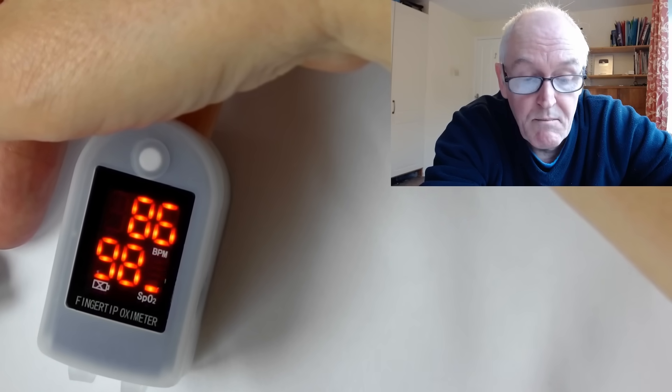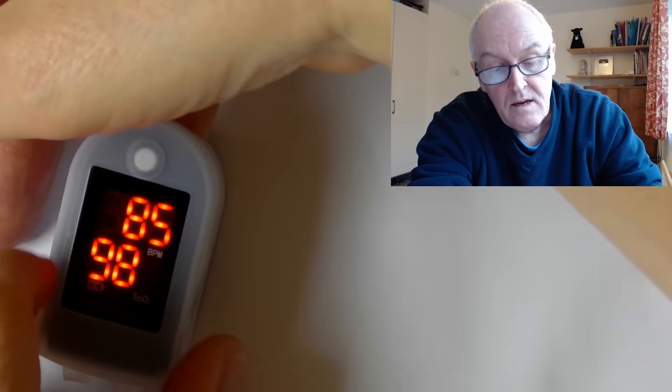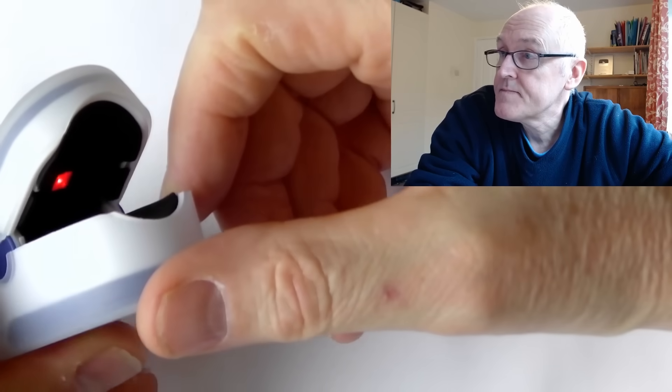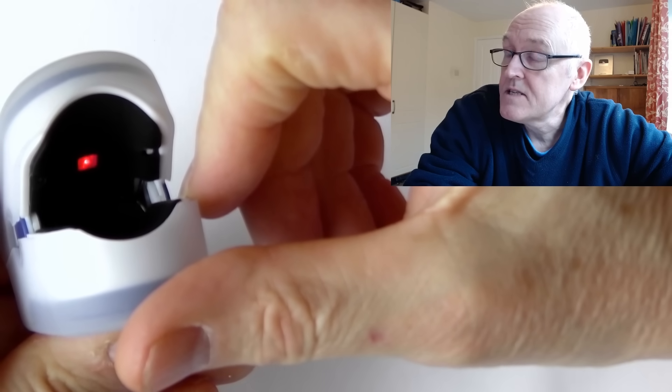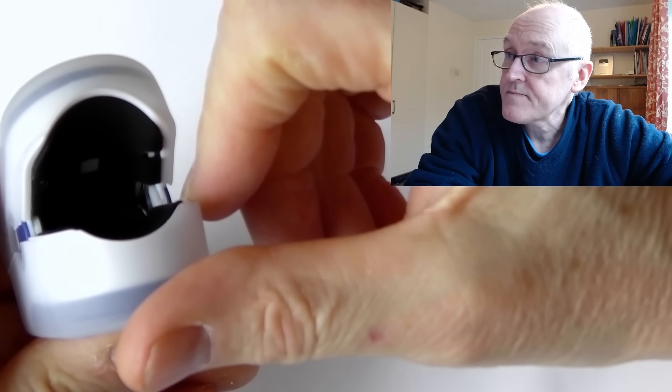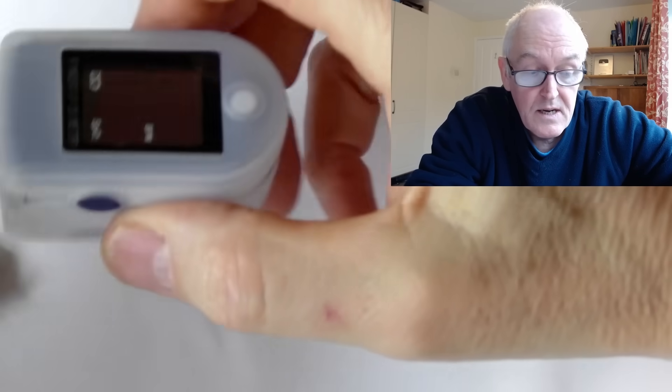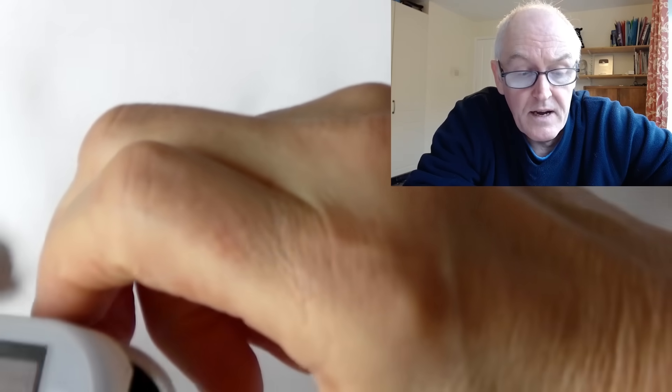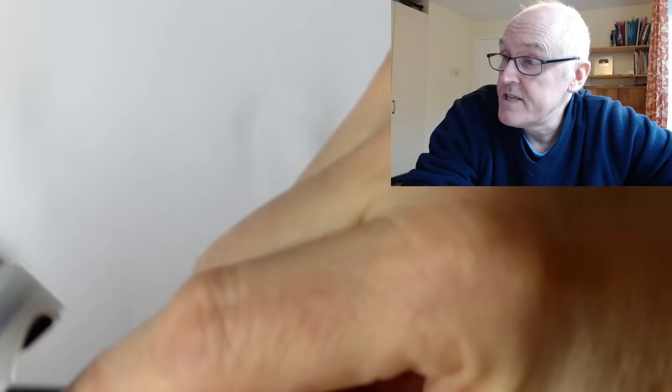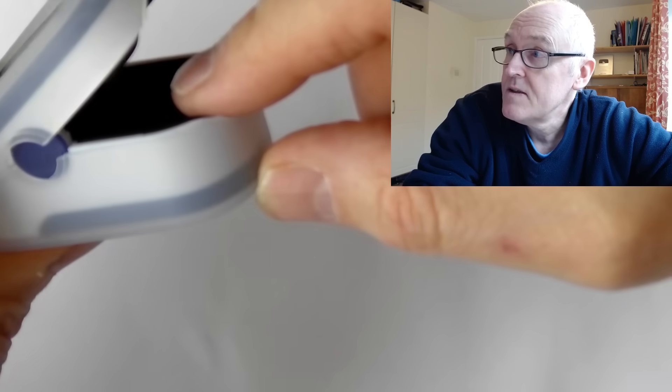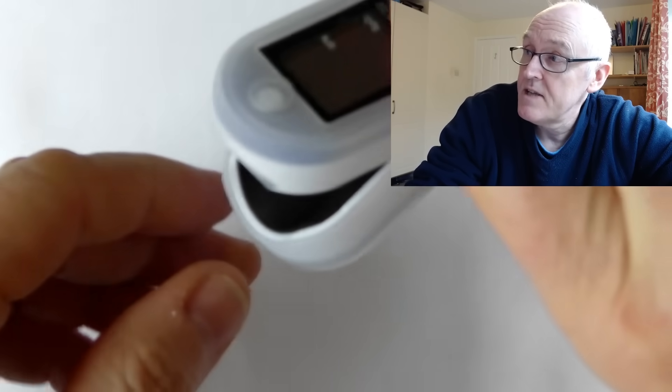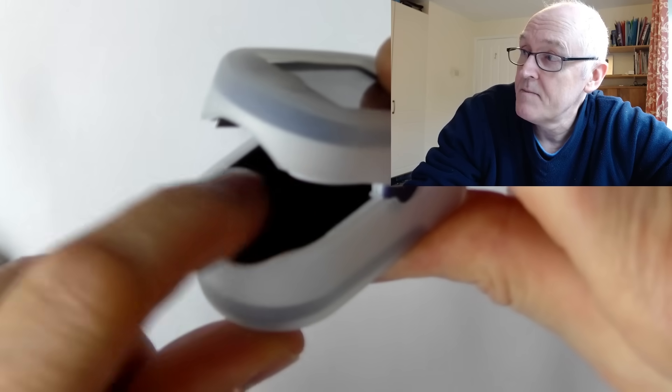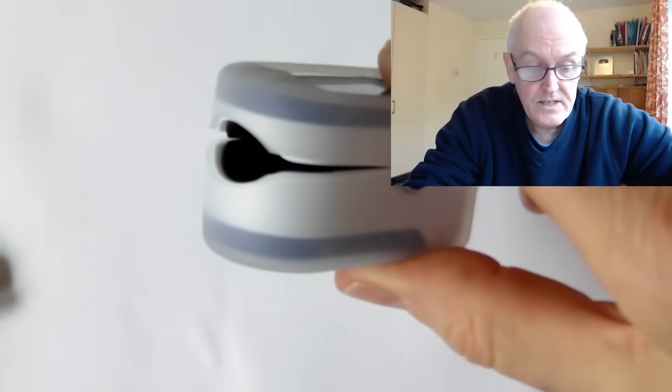Every time a pulse goes through, it's giving you that bar. What these things are doing is they have a little light in there that's pulsating, flickering between red and infrared. That goes through your finger and it's measured on a detector on the other side. You can just see the detector there. That's how these things are working.